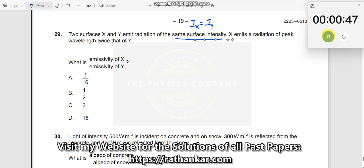And then x emits a radiation of peak wavelength at twice that of y. So from this equation, what do I understand? I write lambda emits a radiation of peak wavelength. Lambda x is equal to 2 times lambda y.